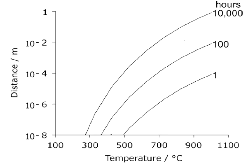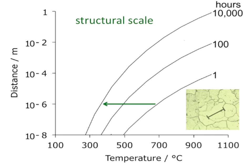Here is a diagram plotting diffusion distance of iron against temperature for various time periods. If I want to produce a microstructure of 100 micrometers scale, I could transform at around 400°C for 10,000 hours, or at 600°C for 100 hours. It's a combination of time and temperature. If I want a finer scale, I need to go to a lower transformation temperature.